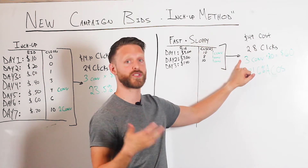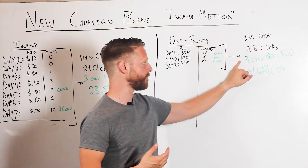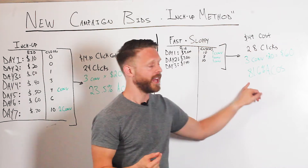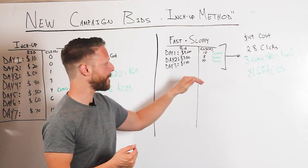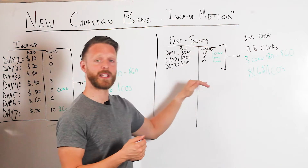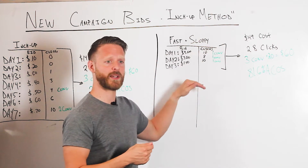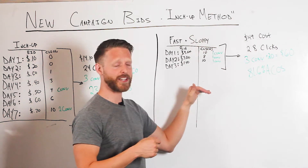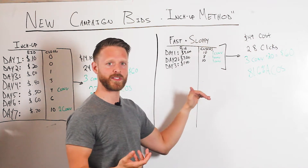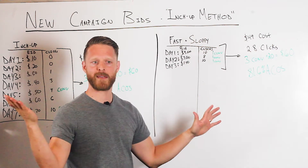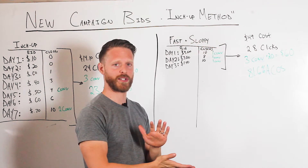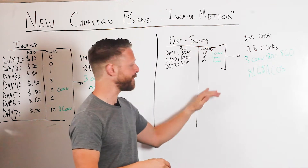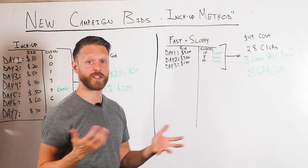They spent a bit, got clicks, and ended up with three conversions at sixty dollars total revenue, giving them an 81 percent ACoS. This person may look at this keyword and say 'whoa, 81 percent ACoS — I really need to do something about this keyword.'